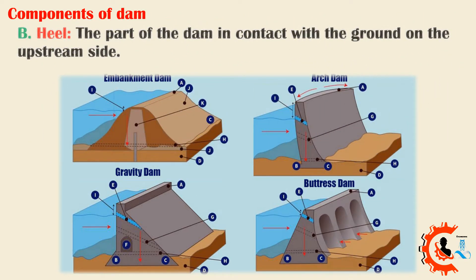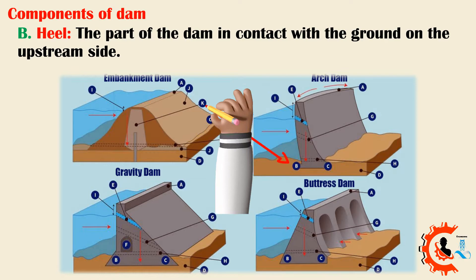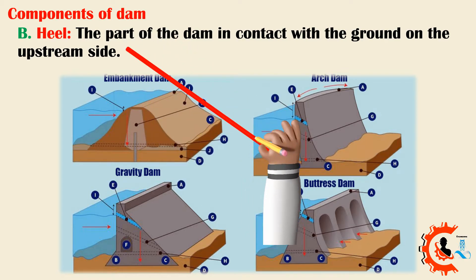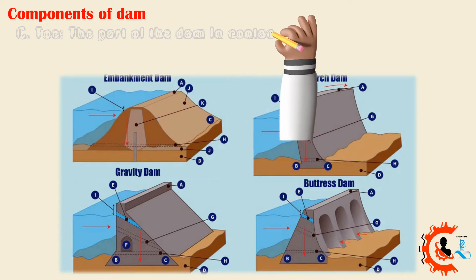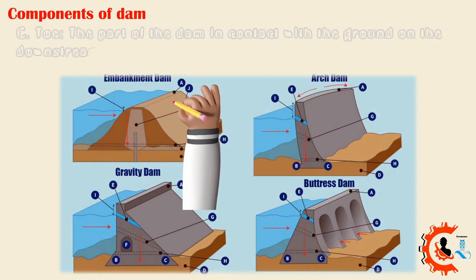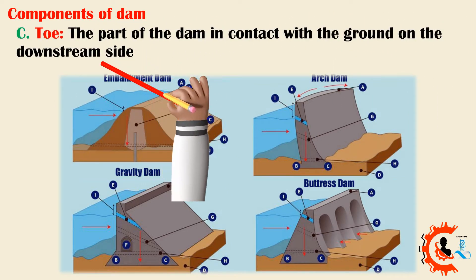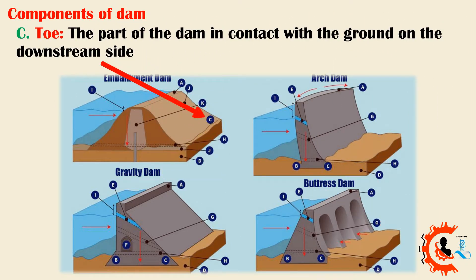B. Heel — the part of the dam in contact with the ground on the upstream side. C. Toe — the part of the dam in contact with the ground on the downstream side.